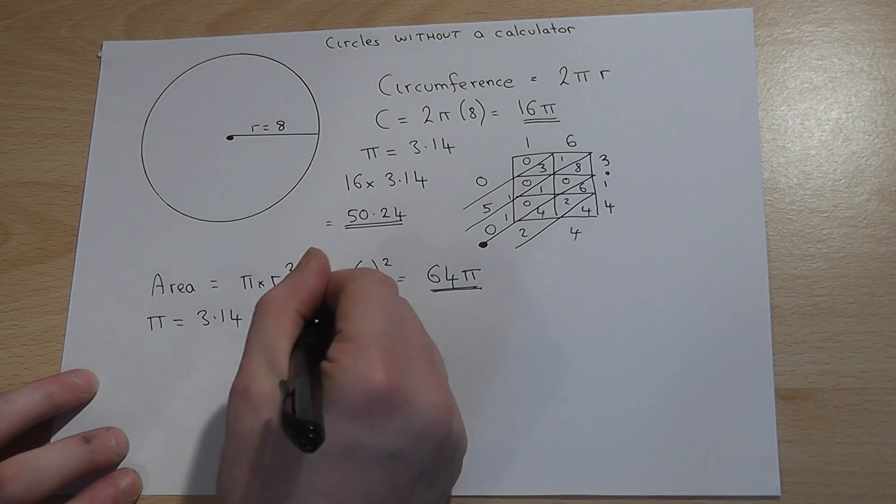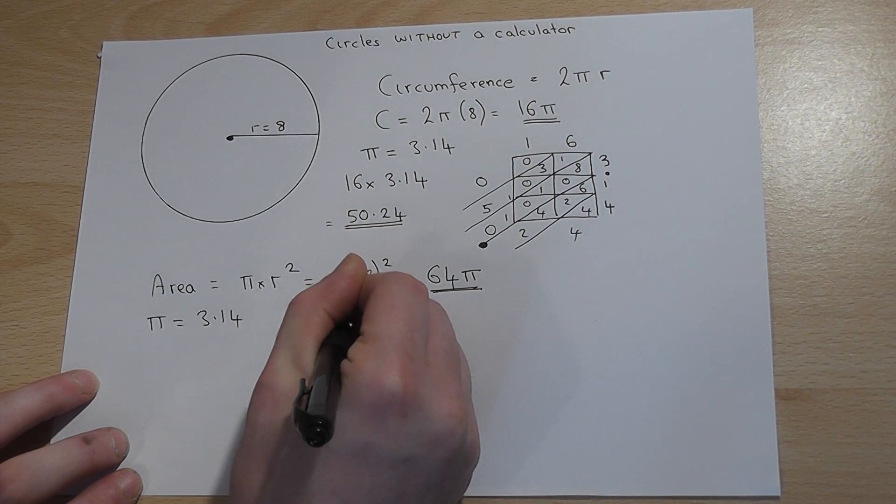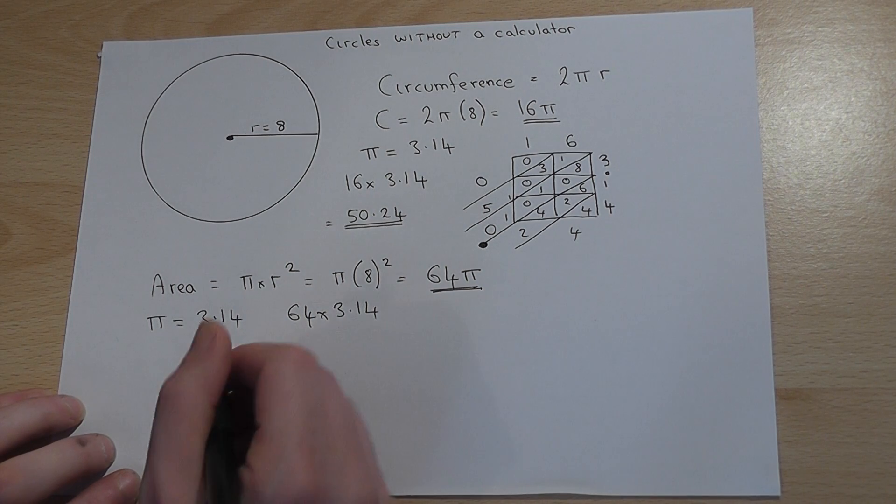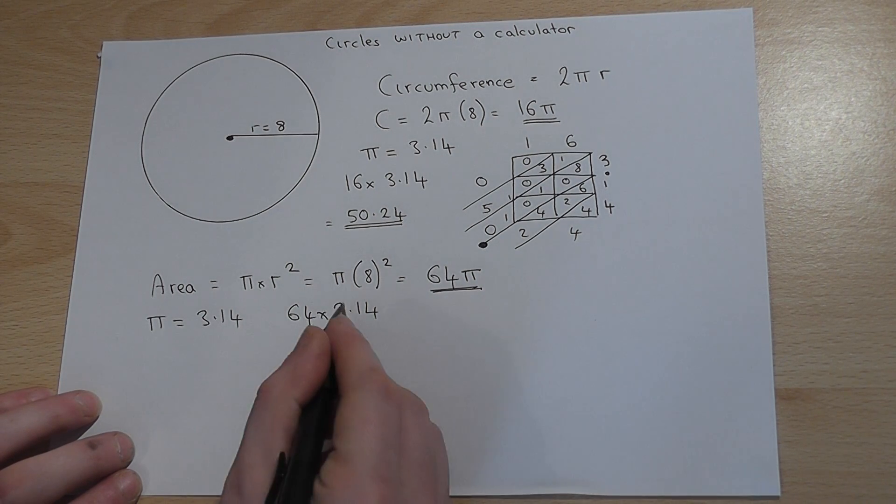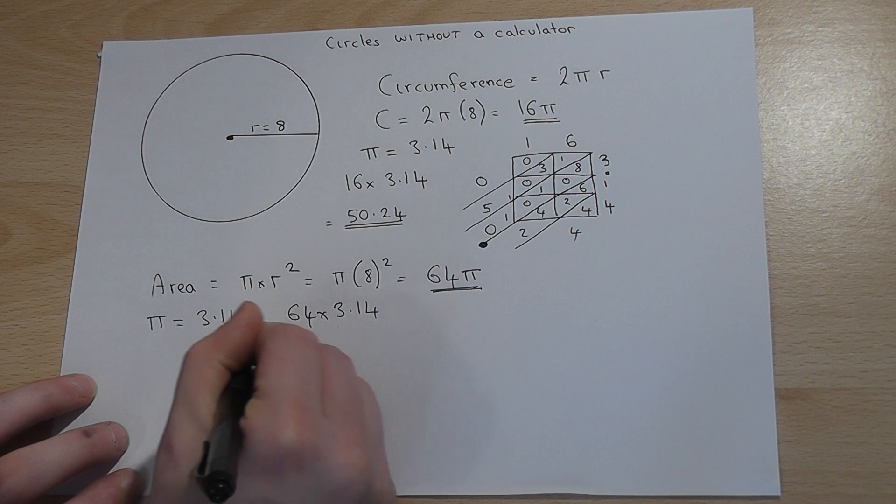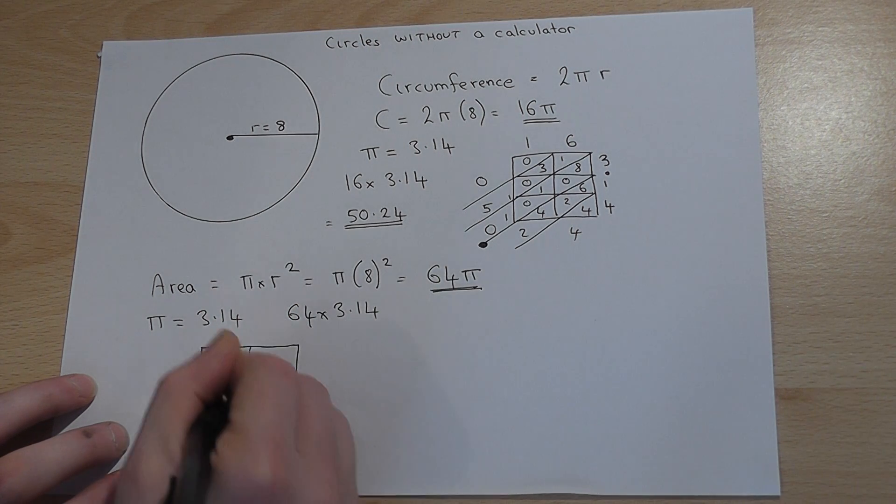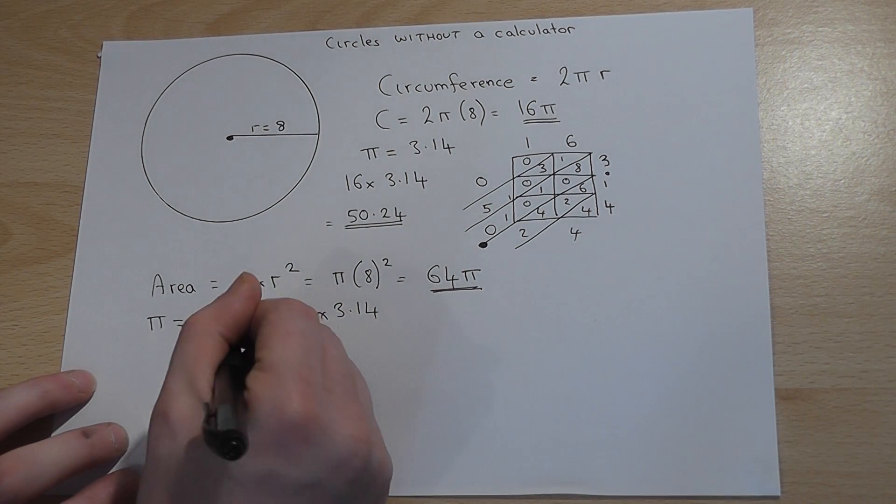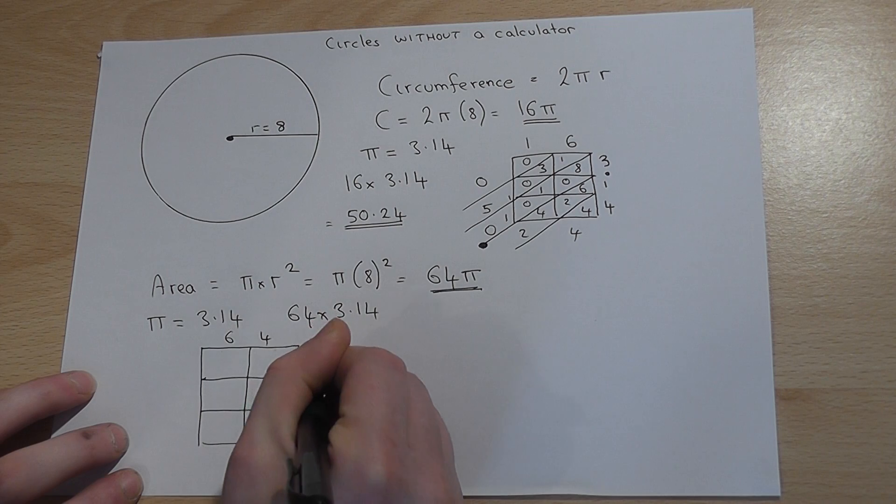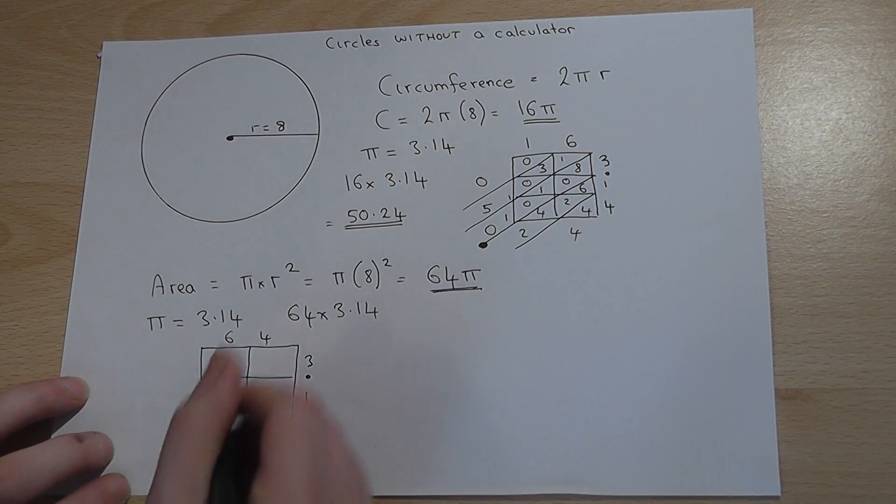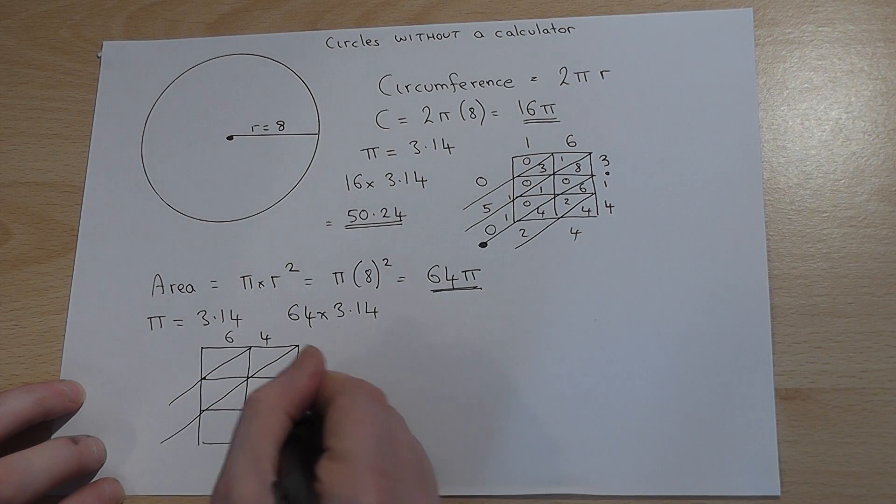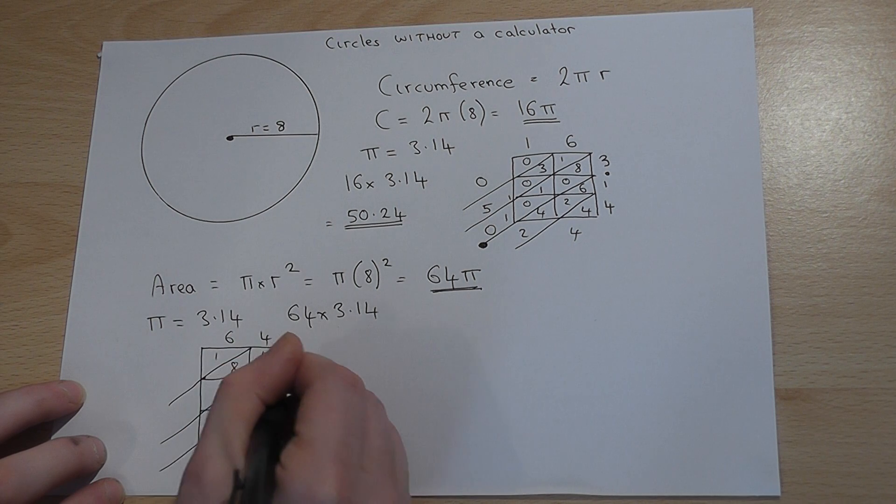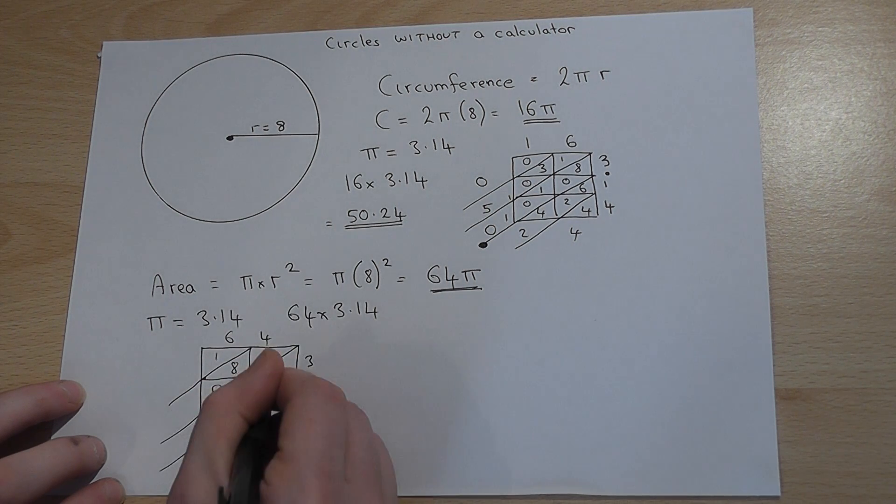Therefore, we have to work out what 64 times 3.14 is, and we can use the same method. Again, 2 digits by 3 digits, we draw a grid. You can of course use your own methods, but I find this way is often the most successful. 64, 3.14. We put in the diagonals to separate the units and tens in each part of the calculation and fill in each part as we work it out.